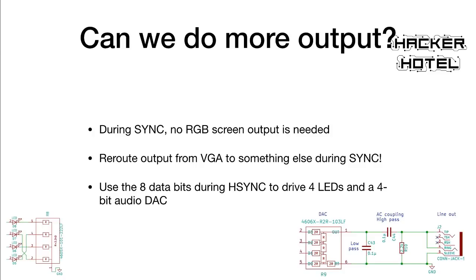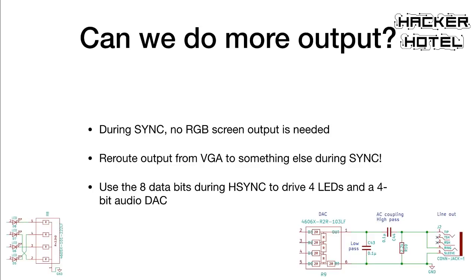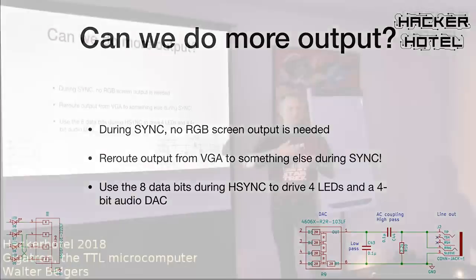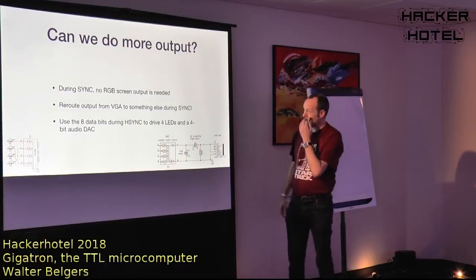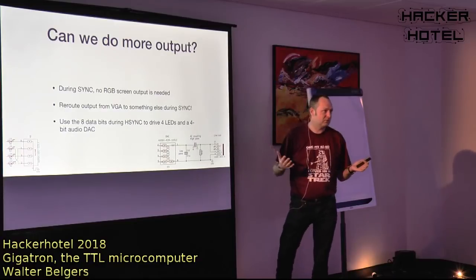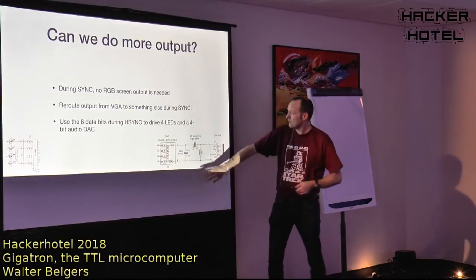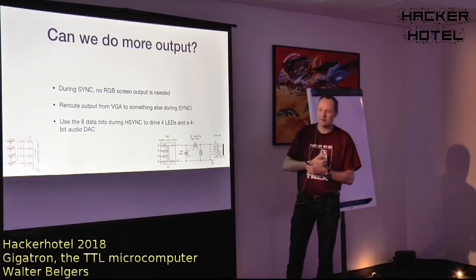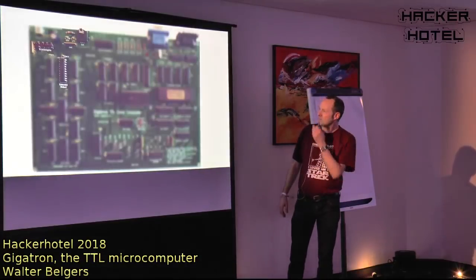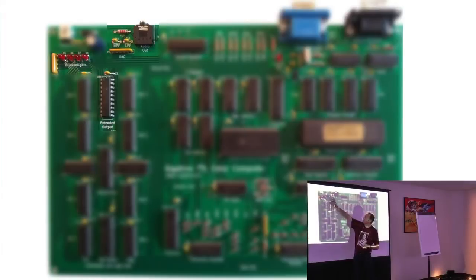We wanted more outputs without much extra hardware. During the H-sync signal, there's no VGA output needed. So we use those 8 output bits for something else during H-sync — for each scanline we can output another 8 bits. We use 4 bits for blinking lights and 4 bits for audio via a 4-bit DAC digital-to-analog converter. That requires just one chip for extended output, blinking lights, and audio. Really simple.